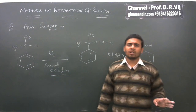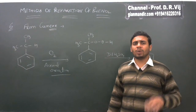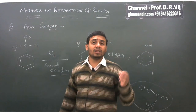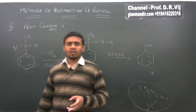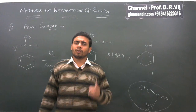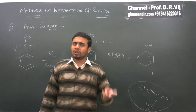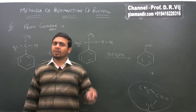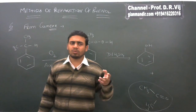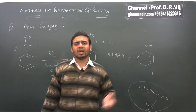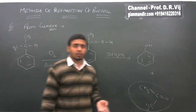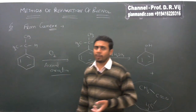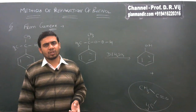In this lecture we discussed some methods by which we can easily prepare phenol in the laboratory as well as in the chemical industry. The first method was from benzene sulfonic acid, the second from salicylic acid, the third from benzene diazonium salt, the fourth from Grignard reagent, the fifth was Dow's process, and the last method was from cumene. This is all about the methods of preparation of phenols — thank you.